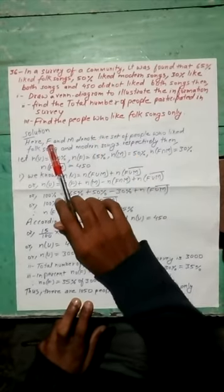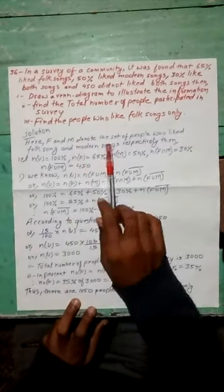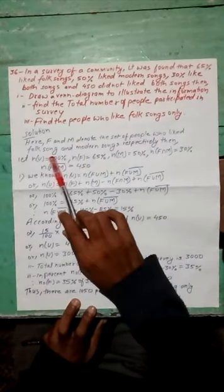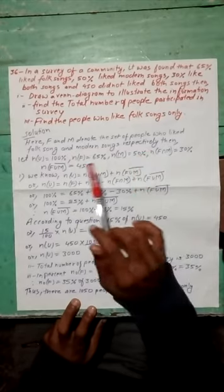In a solution given here, let F and M denote the set of people who liked fox song, modern song, respectively. Then,